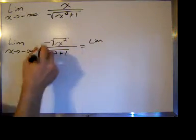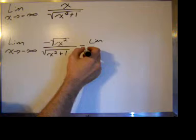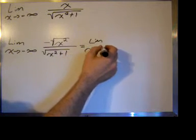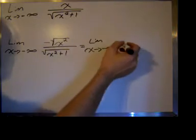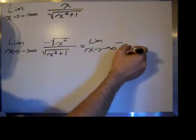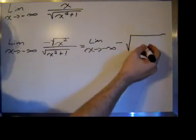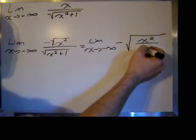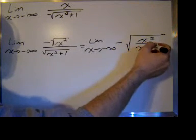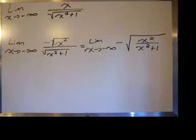Now we have a radical over a radical, and we can rewrite that as the limit as x approaches negative infinity, and I'm going to put the negative, and then we can put the entire expression under the radical. So we have x squared over x squared plus one.